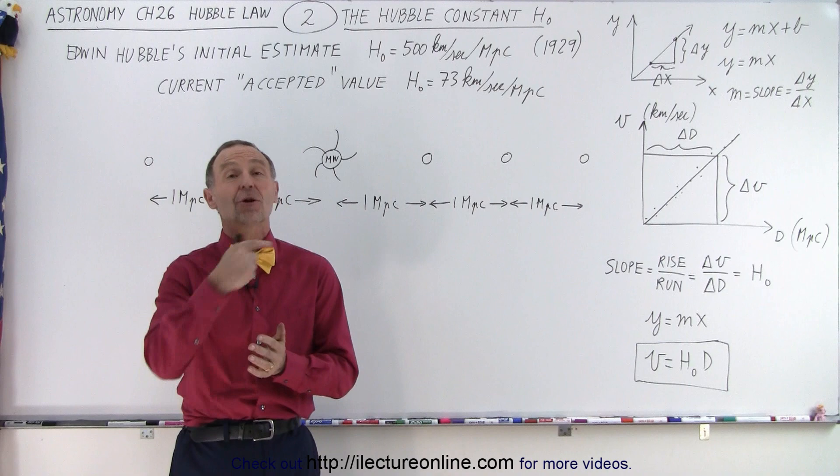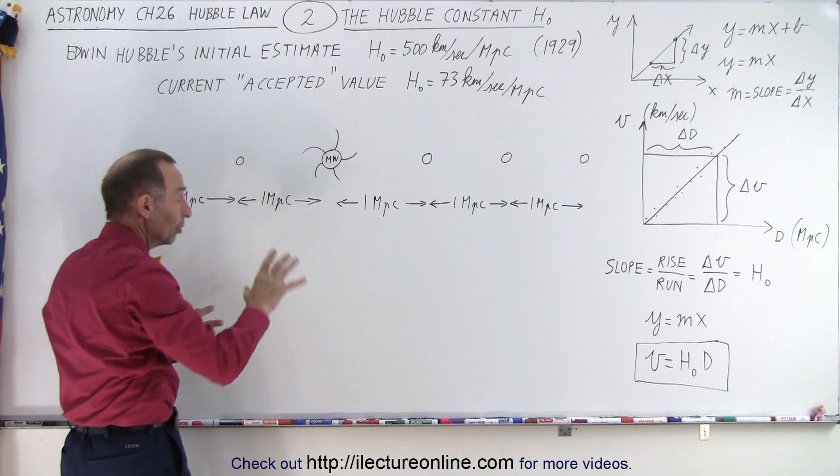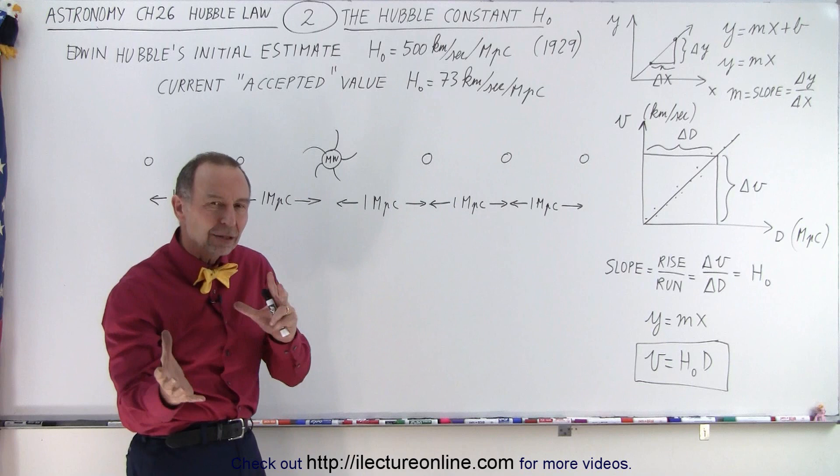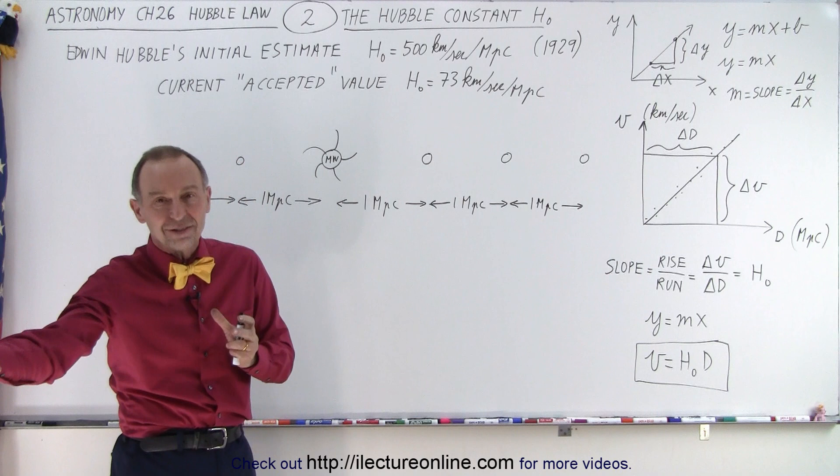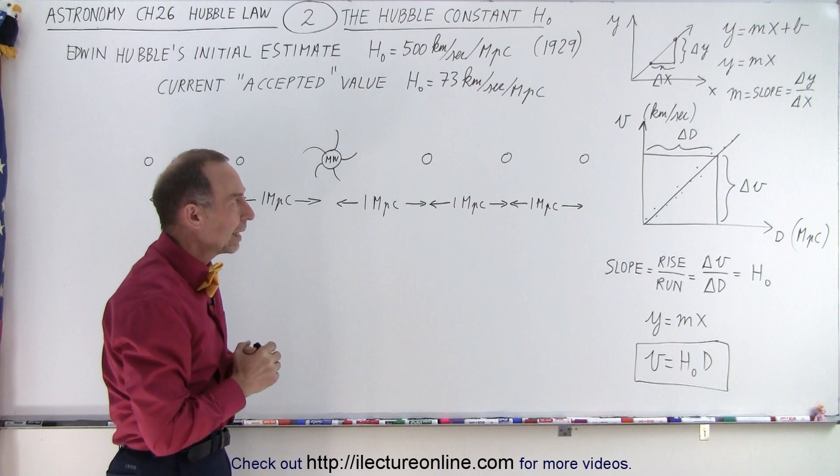But let's go back in history, back in 1929 when Edwin Hubble determined an initial value for the Hubble constant. And where did it come from? It came from that linear relationship between the recessional velocity of galaxies and the distance estimated for those galaxies by using the Cepheid variables to try and figure that out.